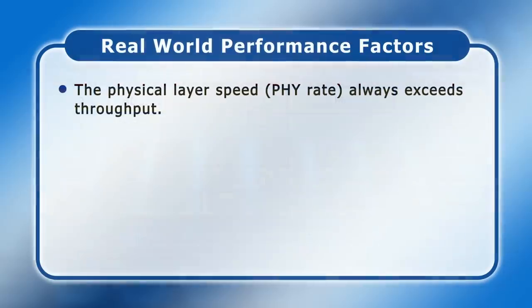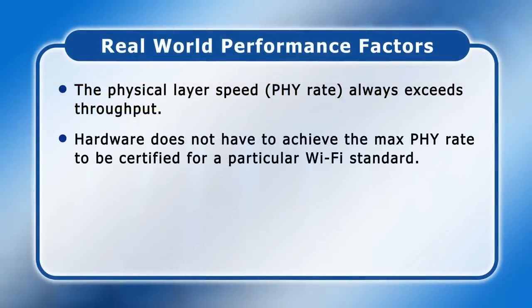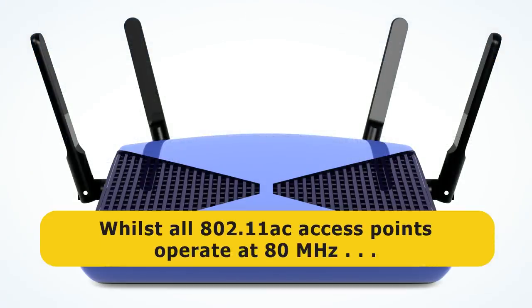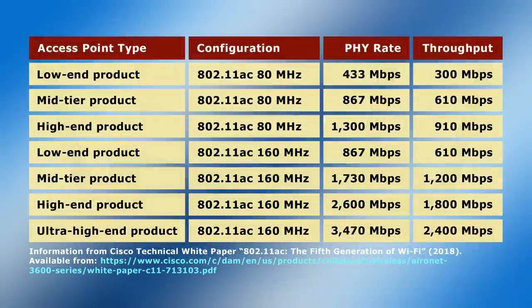Secondly, whilst all Wi-Fi standards have a maximum supported PHY rate, actual hardware does not have to achieve this to be certified for a particular Wi-Fi standard. Rather, the Wi-Fi Alliance sets a minimum that devices must adhere to, but it's up to manufacturers to decide on their individual hardware capabilities. For example, whilst all 802.11ac access points operate at 80 MHz bandwidth, some also function at 160 MHz, which can double data transmission speeds. Here's some data from Cisco indicating how the PHY rate and delivered throughput varies for some typical 802.11ac access points.